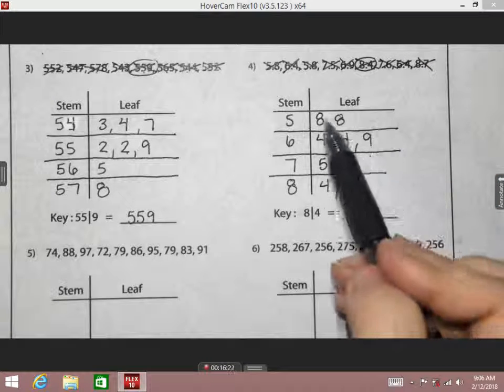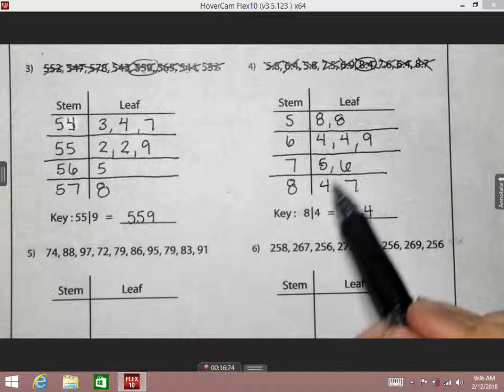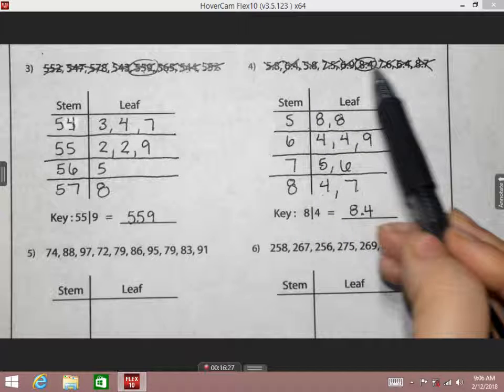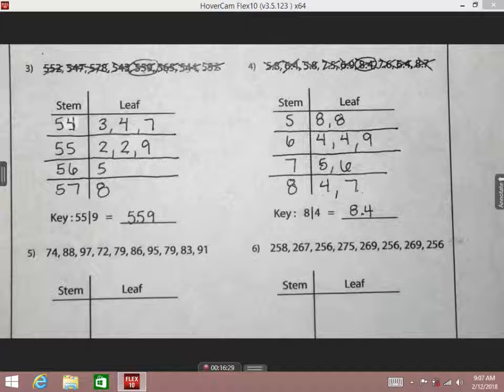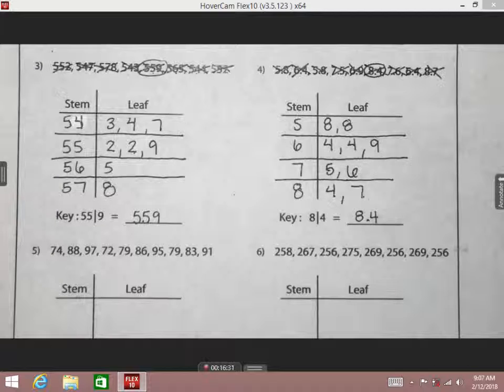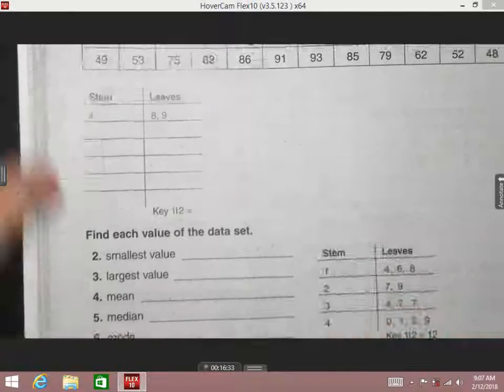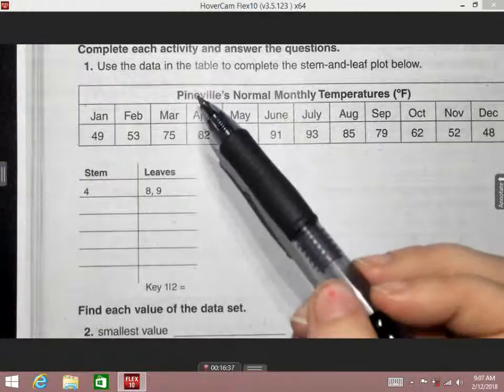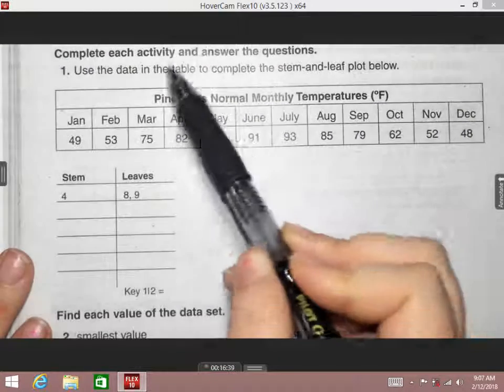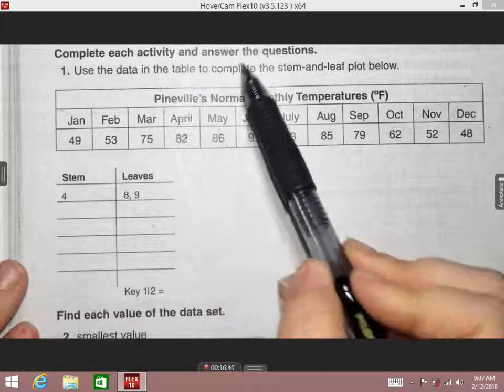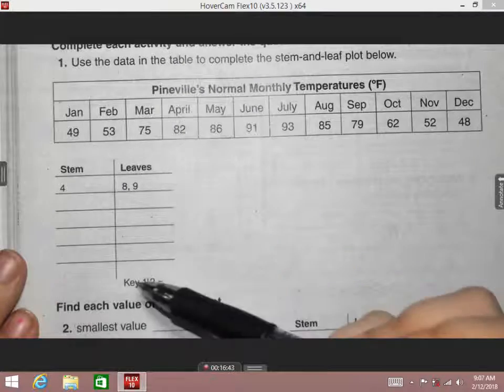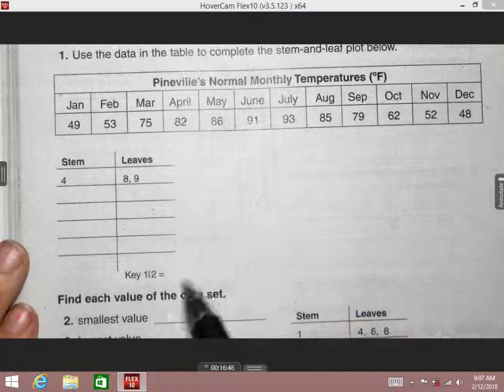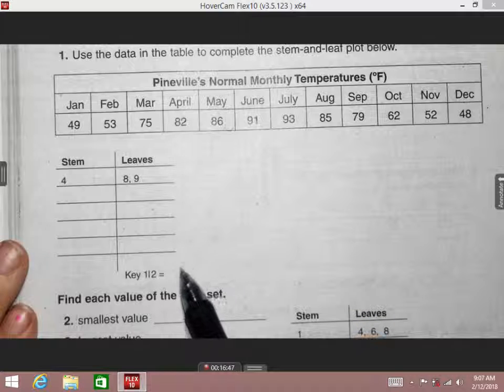Again, I can count them. 1, 2, 3, 4, 5, 6, 7, 8, 9. I want you to flip it over onto the back with me real quick. You're going to finish the front, filling in the rest of those charts. On the back, it says to complete each activity and answer the questions. Right here for number one, you're just making your stem-and-leaf. Still make sure you complete the key.